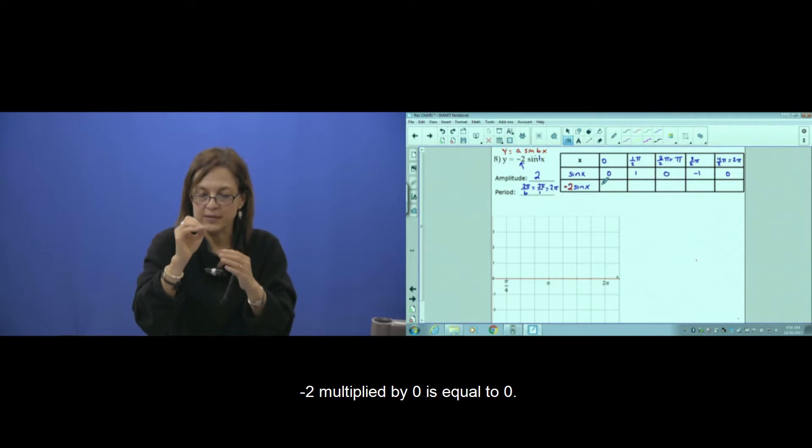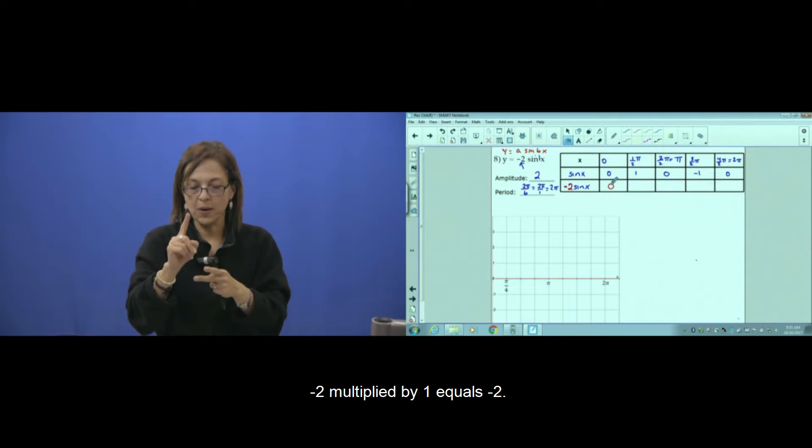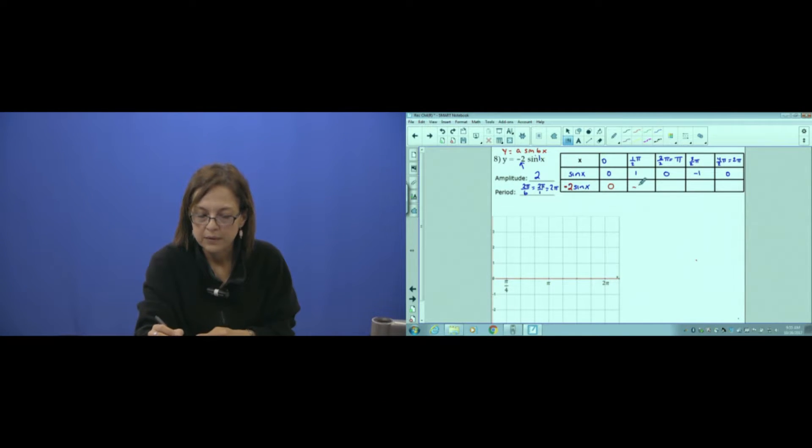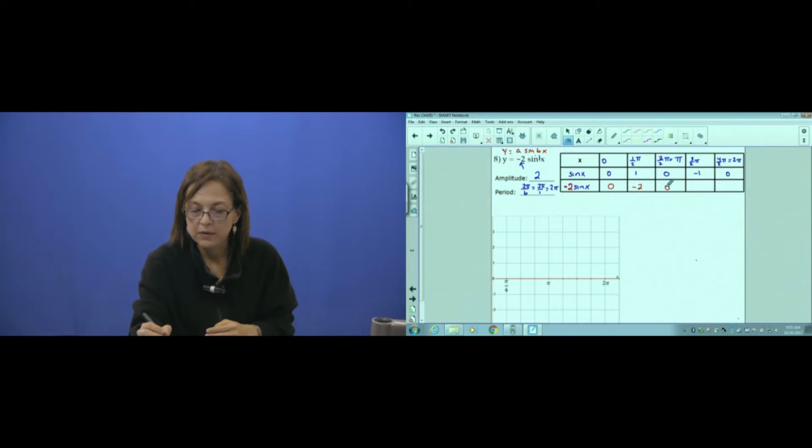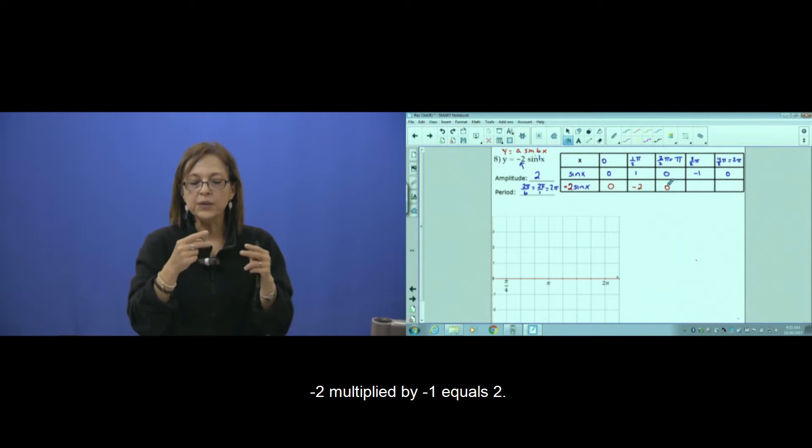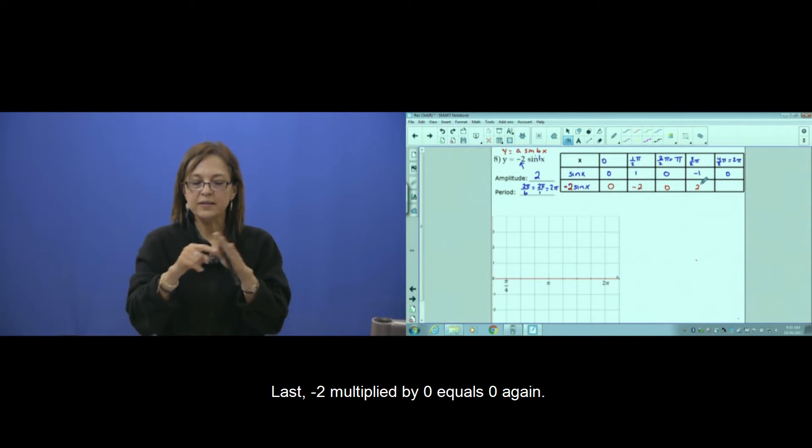Negative 2 times 0 equals 0. Negative 2 times 1 equals negative 2. Negative 2 times 0 again equals 0. Negative 2 times negative 1 equals 2. And the last, negative 2 times 0 equals 0 again.